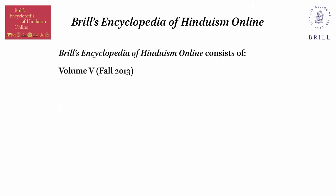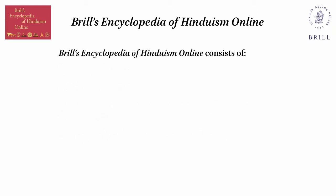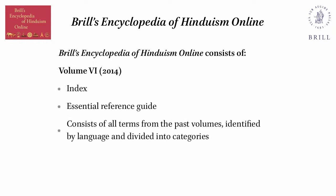Volume 5: Religious Symbols, Hinduism and Migration, Contemporary Communities Outside South Asia, Some Modern Religious Groups and Teachers. Volume 6: Index Essential Reference Guide, which consists of all terms from the past volumes, identified by language and divided into categories.